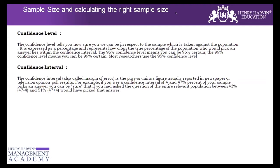So if the population mean is 50, then plus 10% would be 55 and minus 10% would be 45. So we will accept a sample mean in the range of 45 to 55. And confidence level is how confident you are that the data from the sample is representative of the actual population.